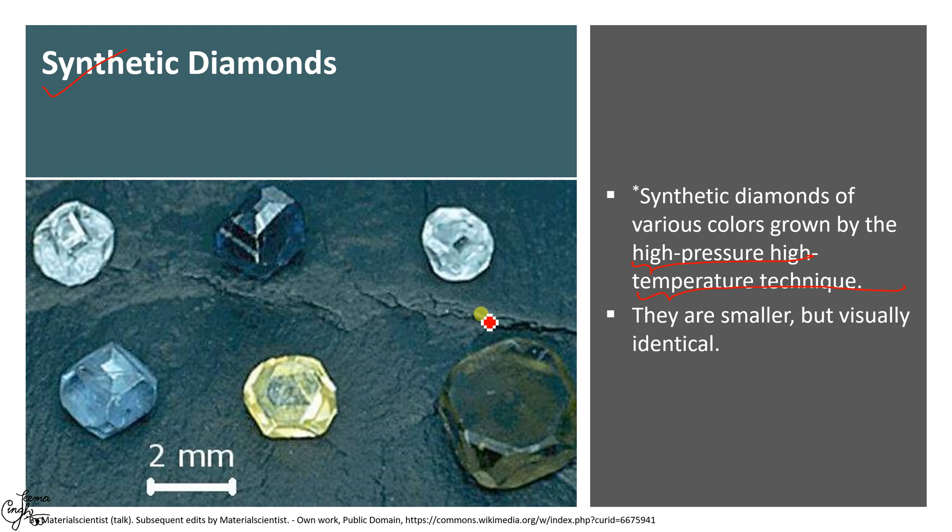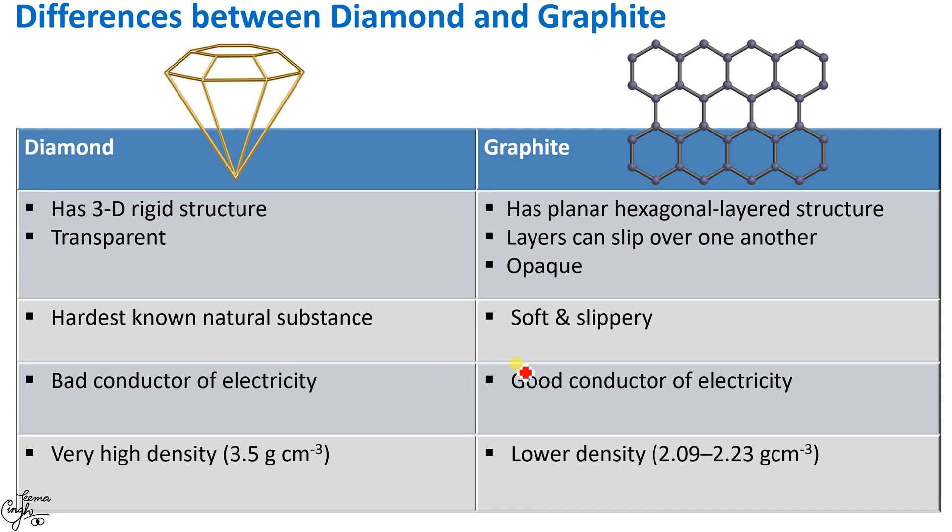Thus we see that due to different arrangement of carbon atoms in their structures, or different structural arrangements, diamond and graphite show different physical properties, even though they have the same chemical properties. Why do they have the same chemical properties? Because both of them are made up of only carbon. Here in this table, I have differentiated the two on the basis of few physical properties. Diamond has three dimensional rigid structure which makes it hard, in fact the hardest natural substance, whereas graphite has planar hexagonal layers where these layers can slip over one another, making it soft and slippery, perfect for its use as a lubricant. Diamond is transparent in nature whereas graphite is opaque. Diamond doesn't have any free electron and is therefore a poor conductor of electricity. Graphite has free electrons and is a good conductor of electricity. Diamond has a very high density of the order 3.5 gram per cubic centimeter, whereas graphite has relatively lower density.